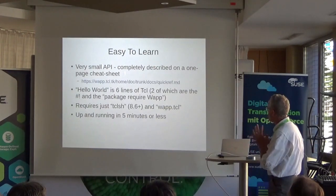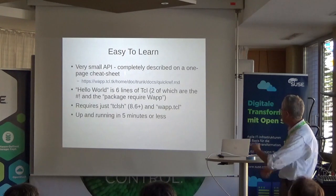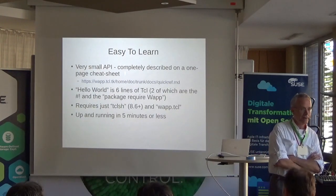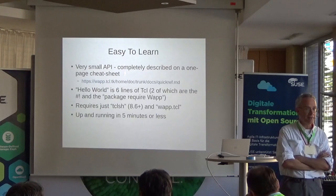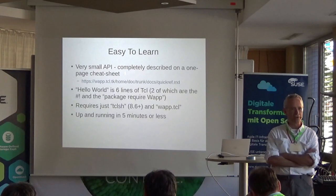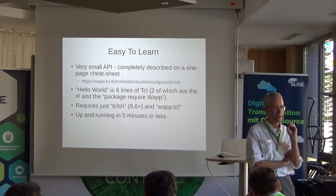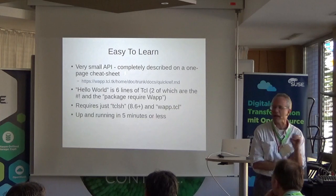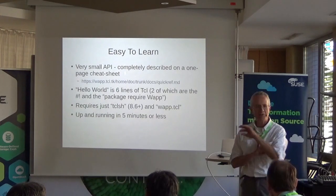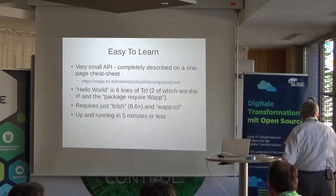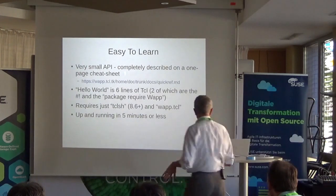WAP allows you to do the classic hello world in about six lines of TCL code, two of which are the shebang and a package require. It uses TCL shell 8.6, but it really wants to use 8.7 — it will be better with 8.7 but will get by with 8.6. And you can be up and running in five minutes or less.